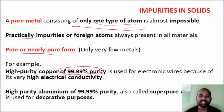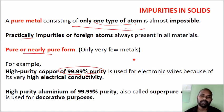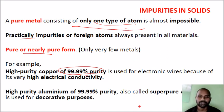This is used for electrical wire. Electric conductivity is also used in electrical wire. This is the maximum purity level, used for decorative purposes. This is the definition of alloys.